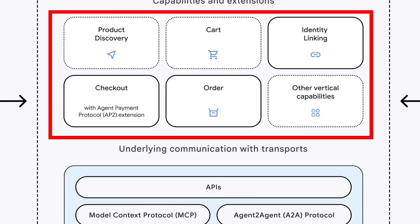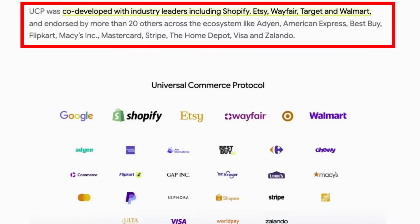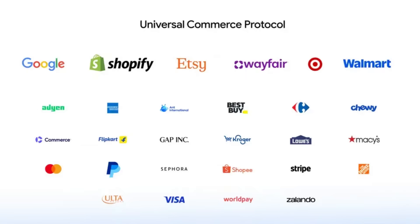It is certainly interesting that Google states straight up that UCP was co-developed with companies like Shopify, Etsy, Target, Walmart, and Wayfair. Along with them, they've also managed to get a number of other really big retail providers to join in. Obviously the big one missing here would be Amazon, but I guess that's not really that surprising.